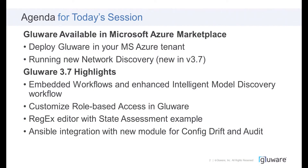For today's session, we have a live demo for each of the content items, starting with a two-for-one where we'll jump into the Glueware availability in Microsoft Azure and show you how that is spun up, as well as running the new feature in Version 3.7 Network Discovery. As we move into the 3.7 Highlights, we'll cover embedded workflows, enhanced model discovery, customizable role-based access, the Regex editor with state assessment, and the Ansible integration with a new module to execute config drift and audit.